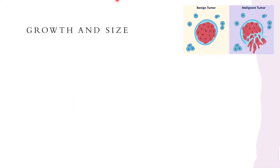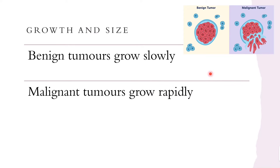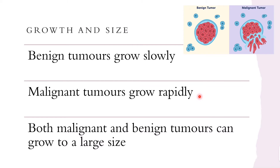Comparing growth and size: benign tumors generally grow quite slowly, as they are localized. Malignant tumors grow more rapidly — the cells divide quicker, and mitosis is happening at a faster rate. Both malignant and benign tumors can grow to a large size, but malignant tumors reach that larger size more quickly than benign tumors due to their faster growth rate.